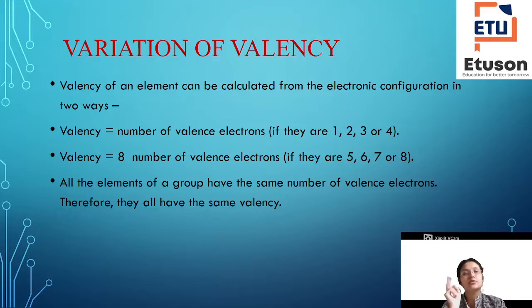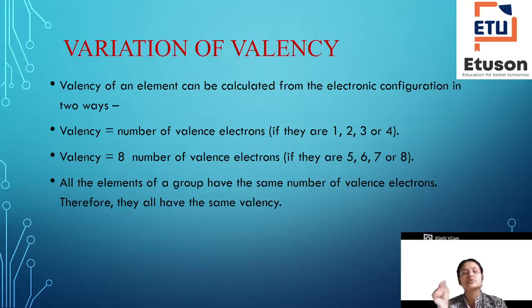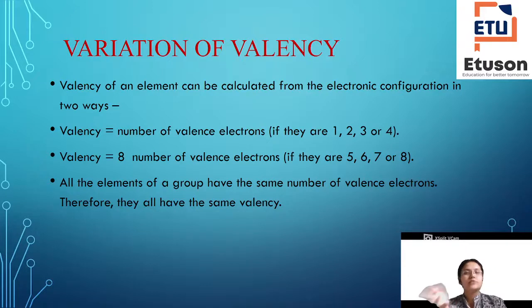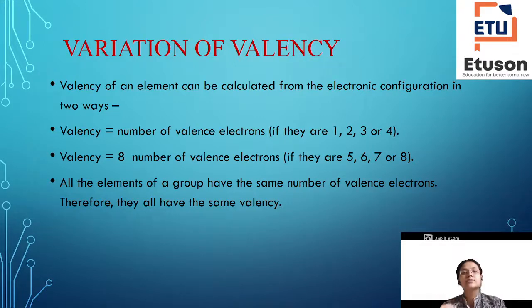If the number of valence electrons is one, two, three, or four, then the valency is the same as the number of valence electrons. If the number of valence electrons is five, six, seven, or eight, then the valency is eight minus the number of valence electrons. All elements of a group have the same number of valence electrons, so they all have the same valency.